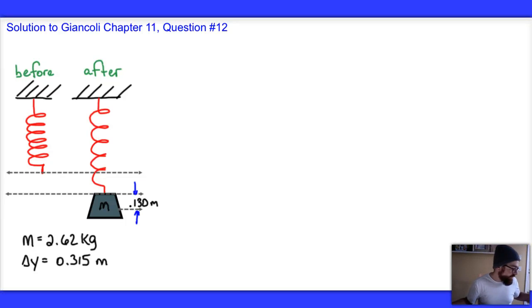This is question number 12 from chapter 11. It reads: a mass of 2.62 kilograms stretches a vertical spring 0.315 meters. If the spring is stretched an additional 0.13 meters and released, how long does it take to reach the new equilibrium position again?